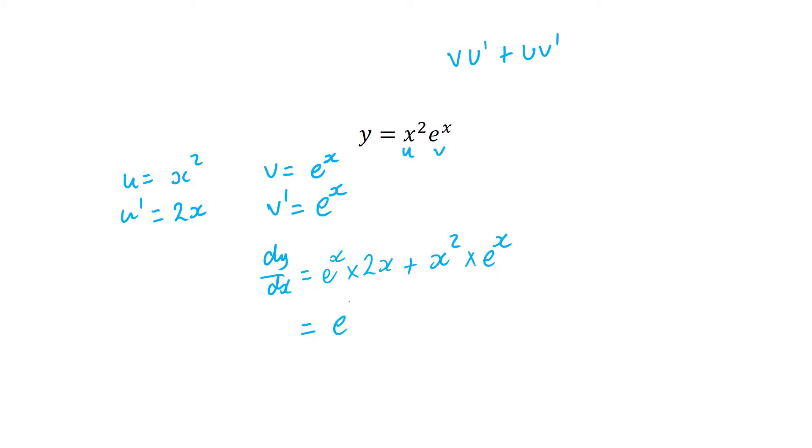So dy/dx is going to be equal to e to the power of x times 2x plus x squared. Too easy. Now the next one we're going to look at is an example of the quotient rule.